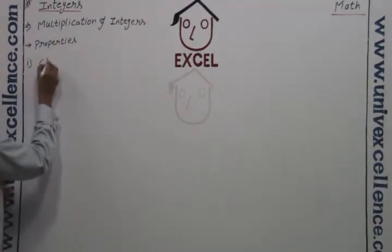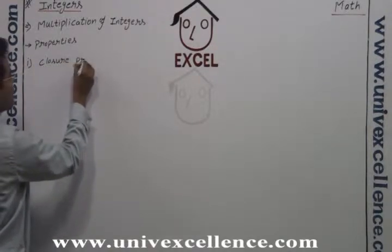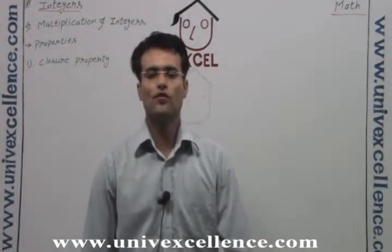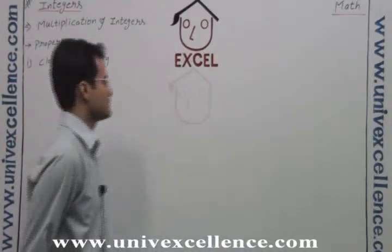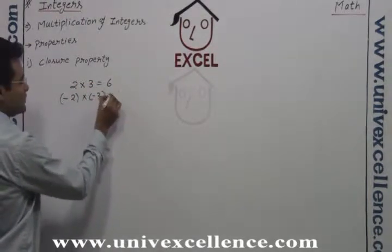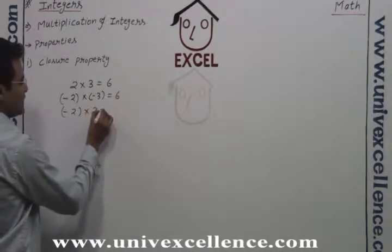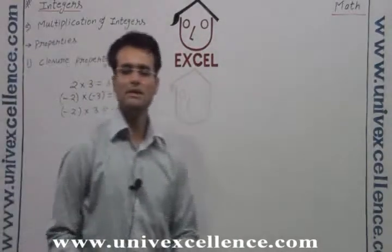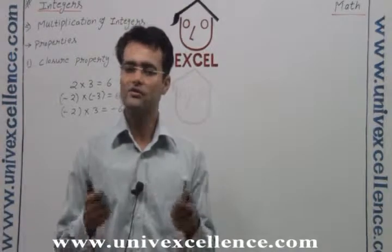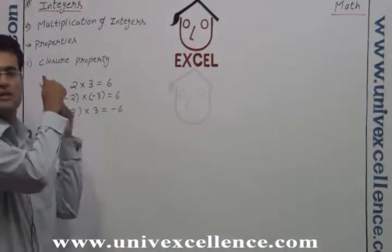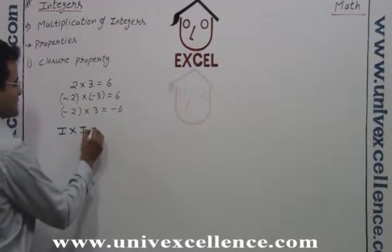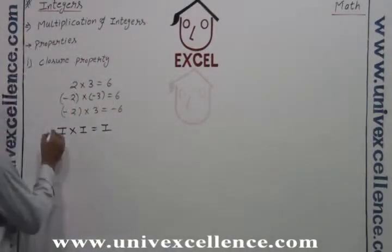Properties. The first is the Closure property. For the Closure property: 2 into 3 is 6, minus 2 into minus 3 is also 6, minus 2 into 3 is minus 6. Whatever integers we multiply, we get an integer. So we can say that the Closure property is followed — integer multiplied by integer gives an integer.